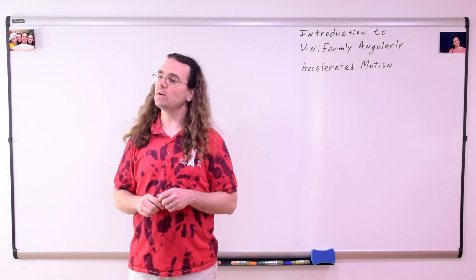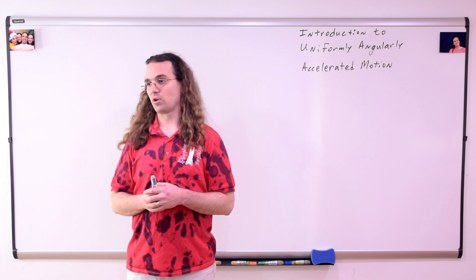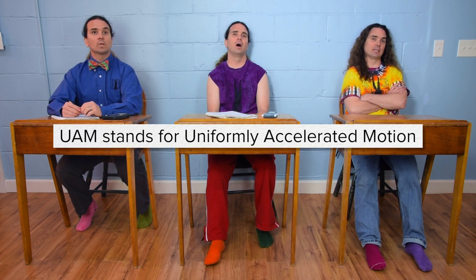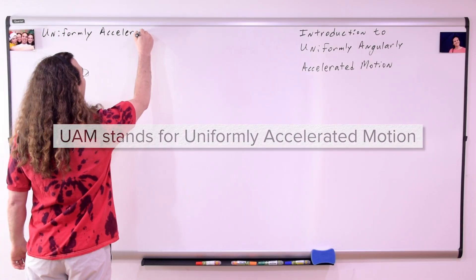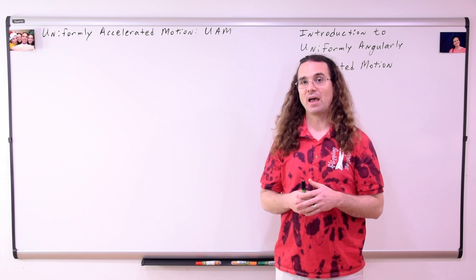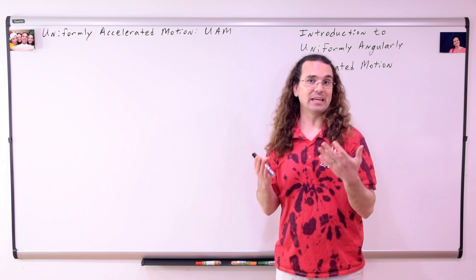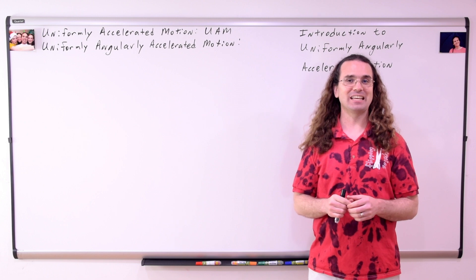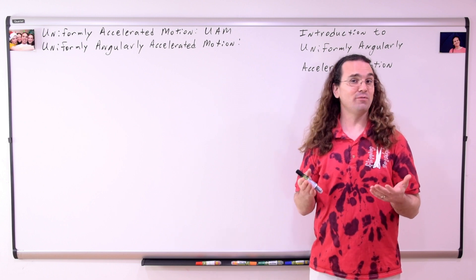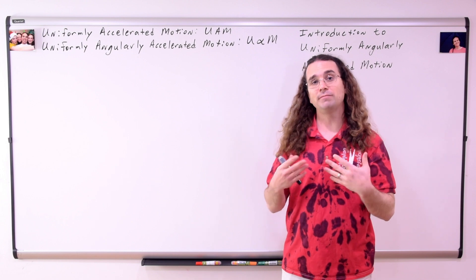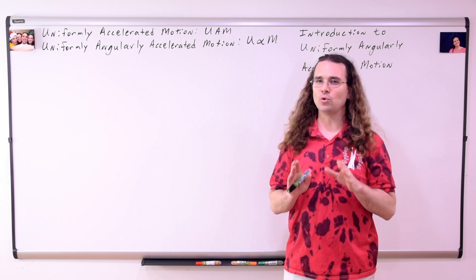Mr. P.: Good morning. Bo, remind me, what does UAM stand for? Bo: Flippin' physics. UAM means Uniformly Accelerated Motion. Mr. P.: Just like an object can have Uniformly Accelerated Motion, an object can also have Uniformly Angularly Accelerated Motion. Because Uniformly Angularly Accelerated Motion is difficult to say, I usually call it U-Fishy-M. In order to extend our understanding of UAM to U-Fishy-M, let's review UAM briefly.